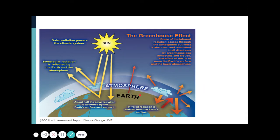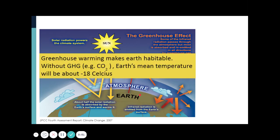The greenhouse effect is the global warming caused by greenhouse gases, and this warming makes our Earth habitable. Without these greenhouse gases, Earth's mean temperature would be about negative 18 degrees Celsius. Currently, the observed global temperature is actually 15 degrees Celsius.